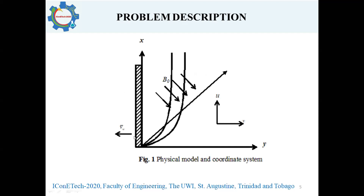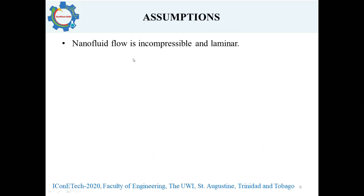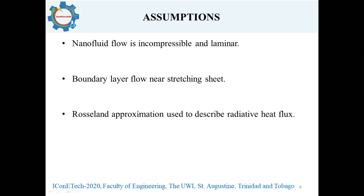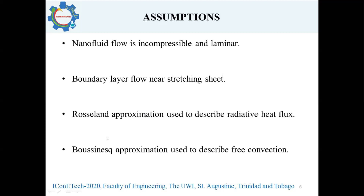Here we have the description of the problem and mathematical model. We have a vertical stretching sheet in line with the x-axis, stretching linearly in the positive x direction. This stretching sheet is also considered to be permeable and has permeation velocity Vw in the y direction. There is also the presence of an inclined magnetic field, inclined at an angle to the y-axis, with magnetic flux density B0. The velocity components of the nanofluid near the stretching sheet in the x and y directions are denoted by U and V respectively. We assume that the nanofluid flow is incompressible and laminar, and the Reynolds number is sufficiently large so that boundary layer flow is assumed near the stretching sheet. The Rosseland approximation is used to describe radiative heat flux, and the Boussinesq approximation is used to describe the effects of free convection within the nanofluid.